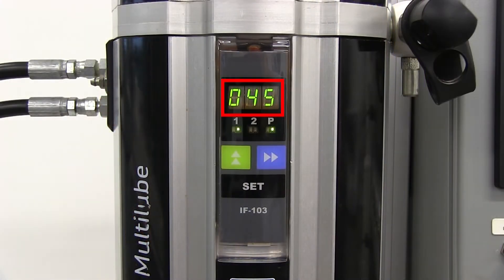Functional programming mode is also used to change the pressure indication units on the display. Normally, these values are provided in bar.